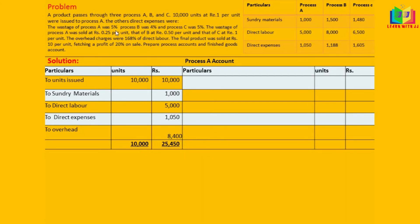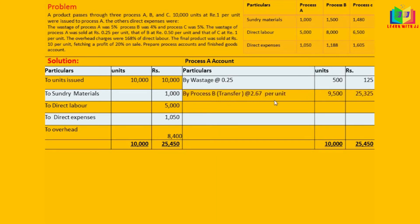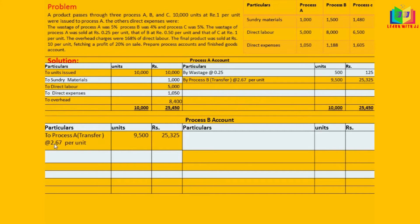Now on the credit side, we calculate wastage. Process A wastage is 5% of 10,000 = 500 units, realizing 25 paise per unit: 500 × 0.25 = ₹125. This is the balancing figure to be transferred to process B account — 9,500 units at ₹25,325.